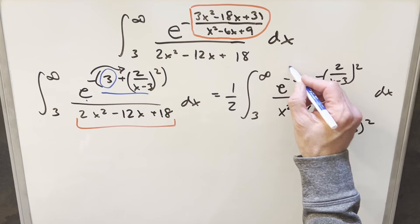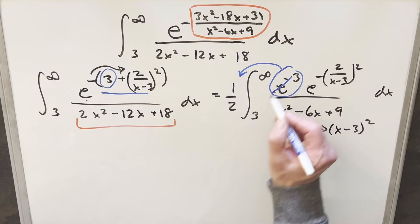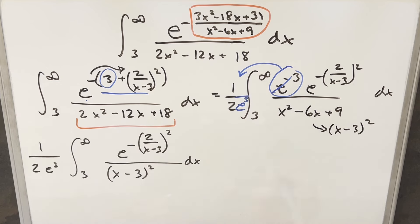And then like I mentioned, this here is just a constant value. So we can take this up front of the integral, but because it's the minus three, I can bring it out. I can bring it into the denominator and just write it as E cubed here. And then at this point, we're getting somewhere. But what I want to do is I want to simplify this further. And what I can do is a U substitution.